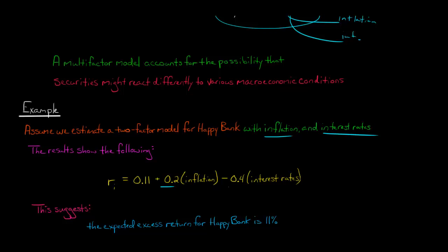We've got a factor here, and we've got a factor here. And each of these factors, it's a coefficient estimate, is what we call this in a regression. So this 0.2 is telling us that if we have a one percentage point increase in inflation, an unexpected one percentage point increase in inflation, then that would lead to a 0.2 percentage point increase in the expected return.